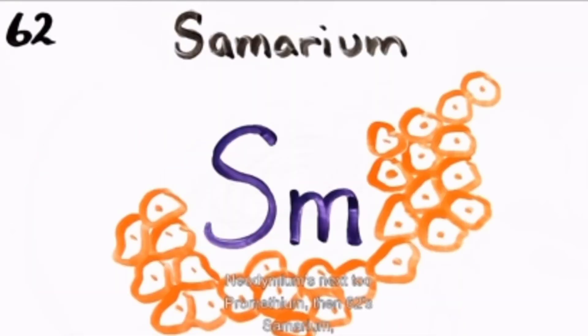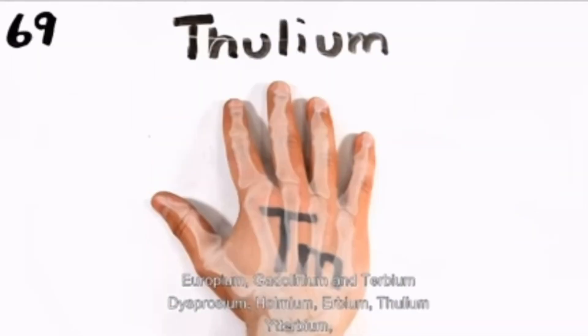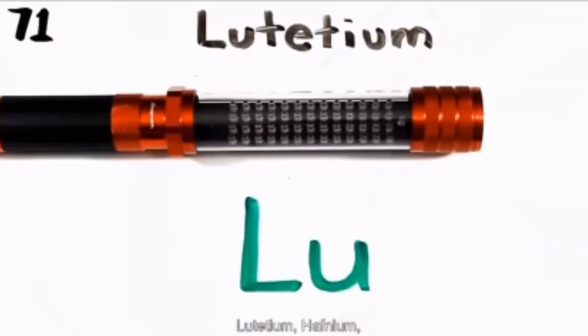Then 62 samarium, europium, gadolinium, terbium, dysprosium, holmium, erbium, thulium, ytterbium, lutetium.